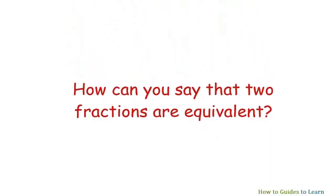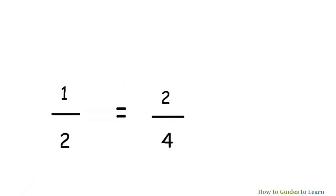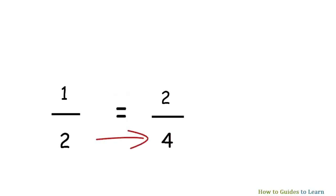How can you say that two fractions are equivalent? Examples explain math better than description, so let's see an example. One by two is equivalent to two by four. How can you get two from one? Multiply one by two. How can you get four from two? Multiply two by two. So we multiplied both the numerator and denominator of one fraction by two to get the other fraction.